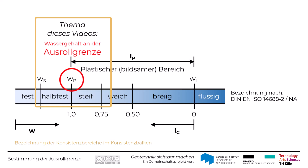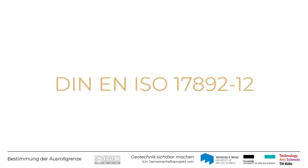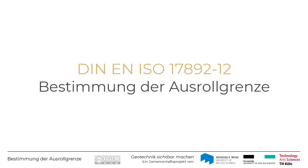Das folgende Video zeigt Ihnen, wie man den Wassergehalt an der Ausrollgrenze oder kurz die Ausrollgrenze im Labor bestimmt. Die Ausrollgrenze bezeichnet den Wassergehalt am Übergang von der halbfesten zu bildsamen, also plastischen Zustandsform. Dieser wird nach DIN EN ISO 17892 Teil 12 mit dem Verfahren zur Bestimmung der Ausrollgrenze ermittelt.